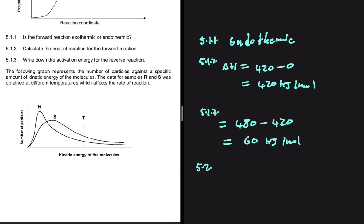Let's look at 5.2. The following graph represents the number of particles against a specific amount of kinetic energy of the molecules. The data for samples R and S was obtained at different temperatures, which affects the rate of reaction. We have the number of particles on the y-axis and the kinetic energy of the particles on the x-axis.